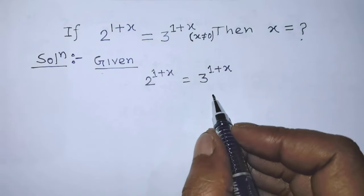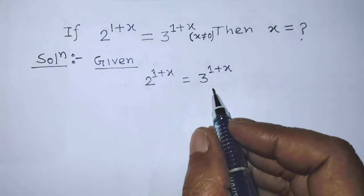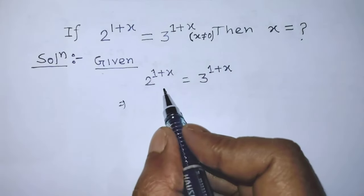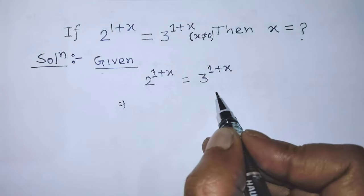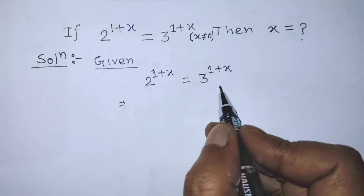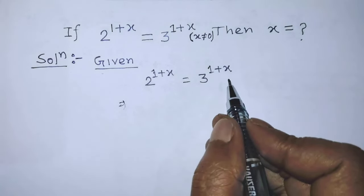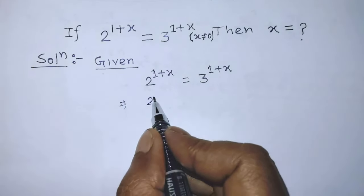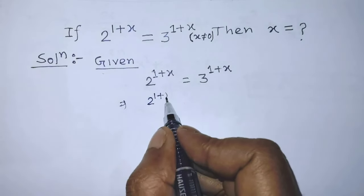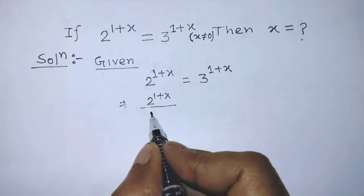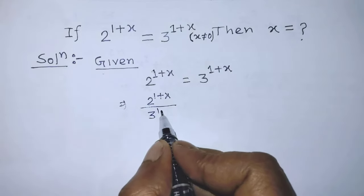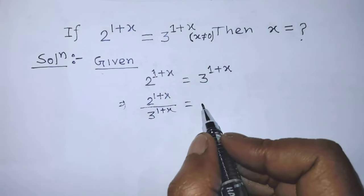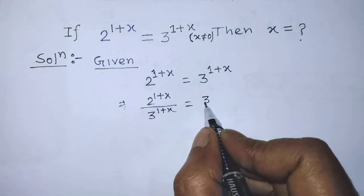To find the value of x from this exponential equation, first of all we have to divide the left hand side and right hand side of this equation by 3 to the power 1 plus x. So now we can write on the left hand side: 2 to the power 1 plus x over 3 to the power 1 plus x, is equal to on the right hand side 3 to the power 1 plus x.